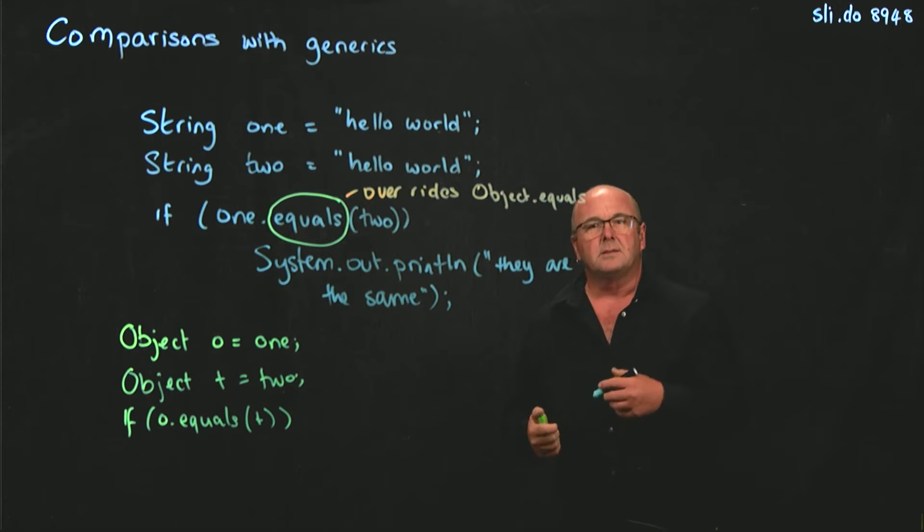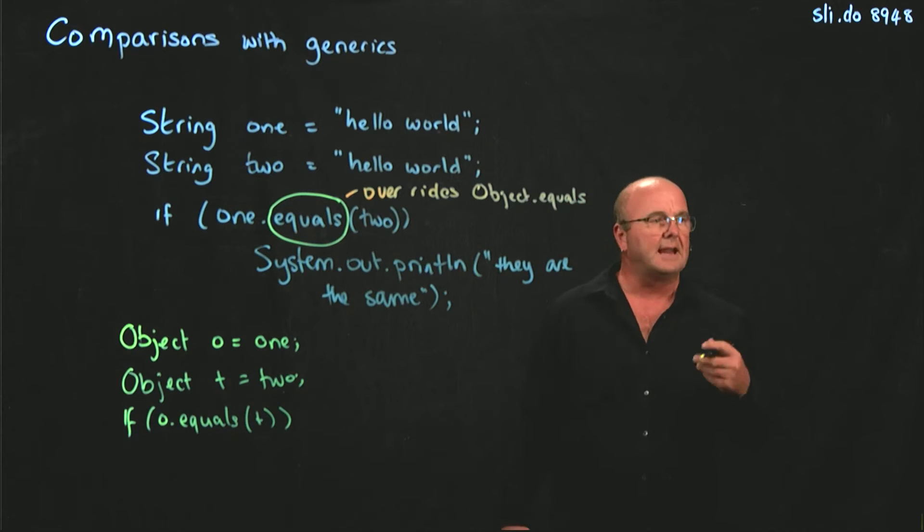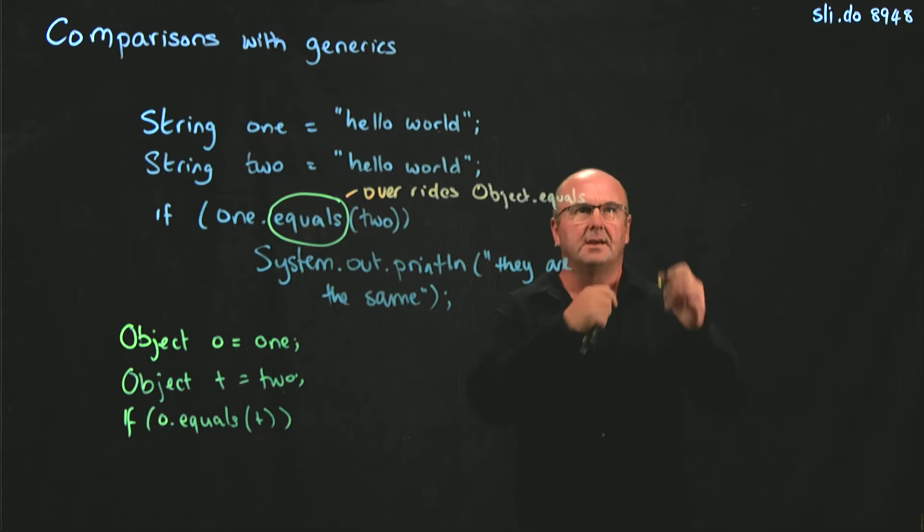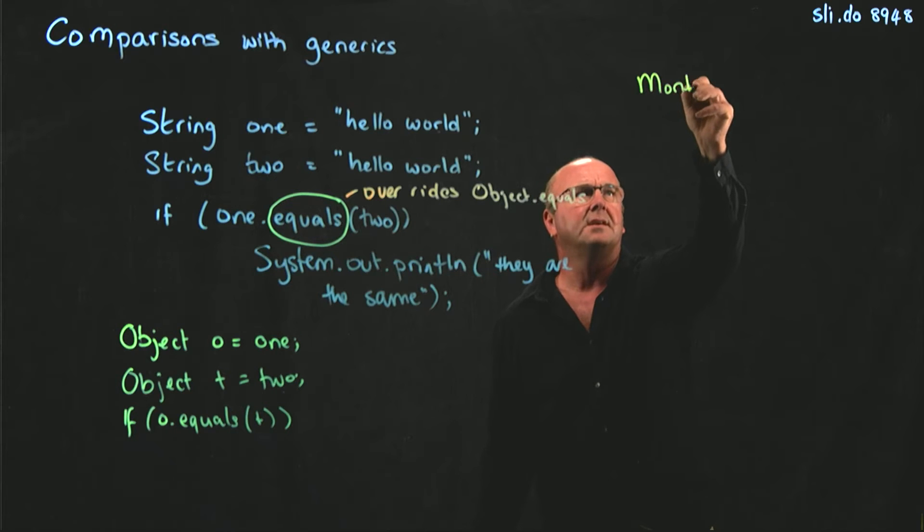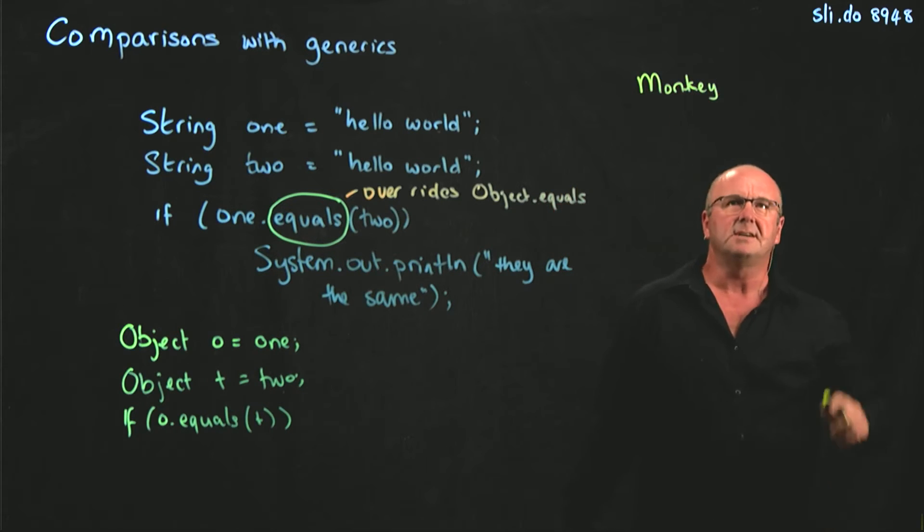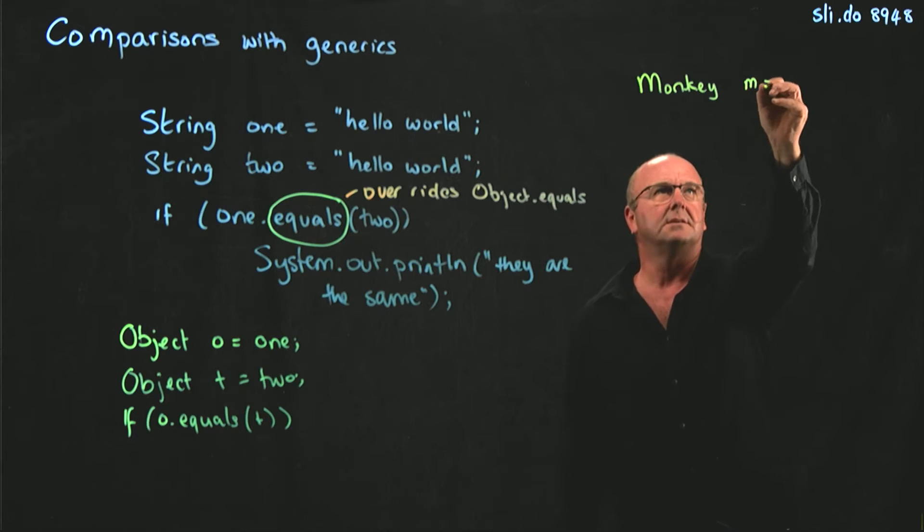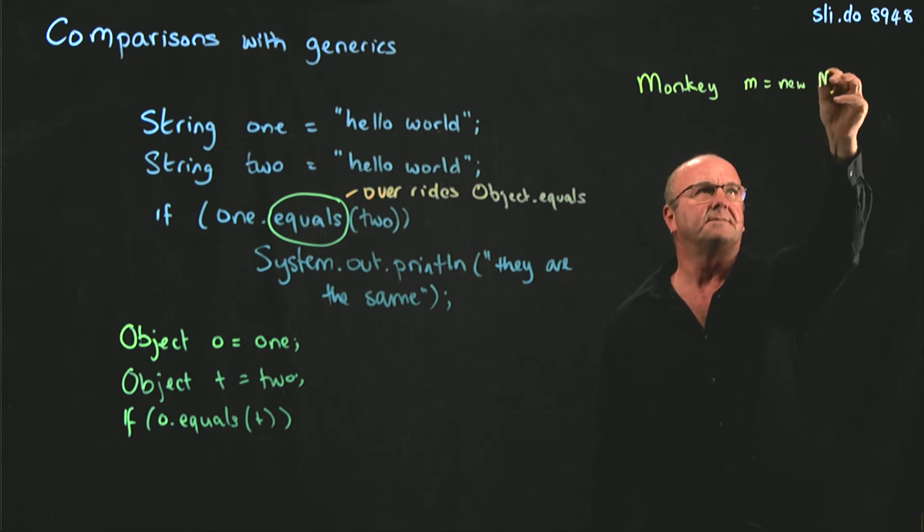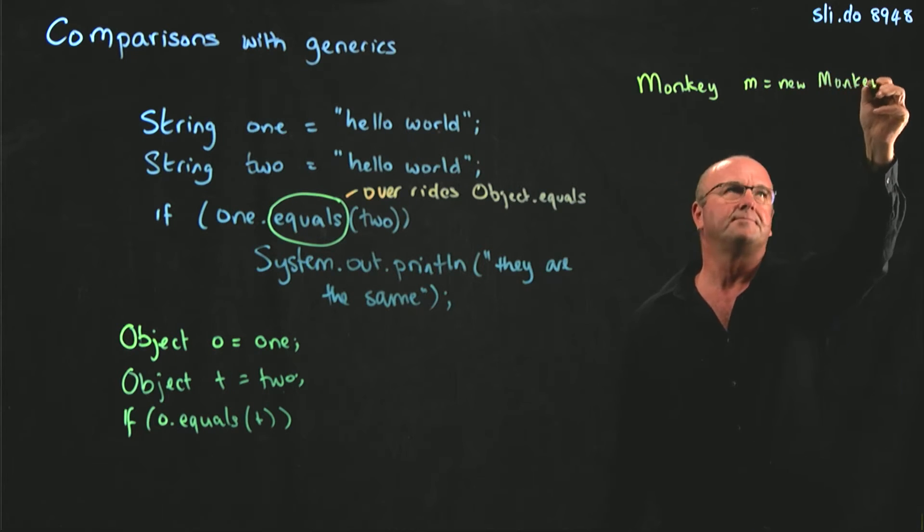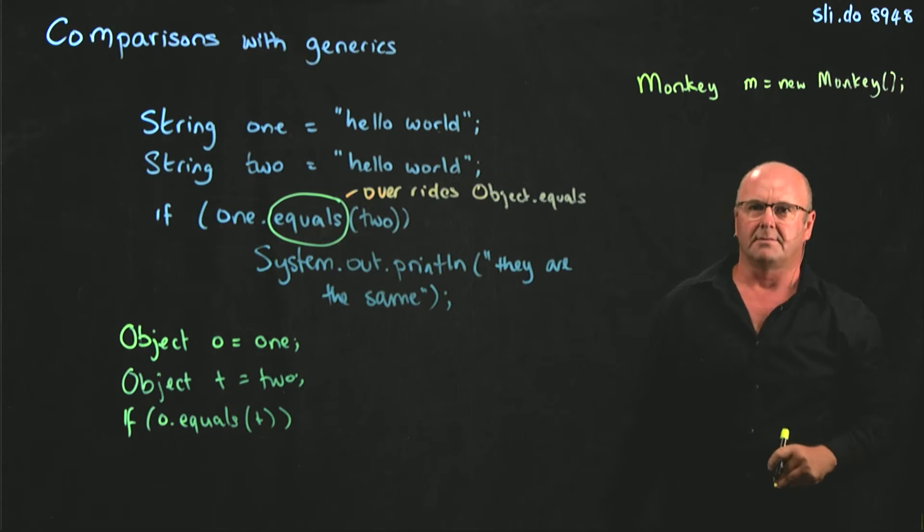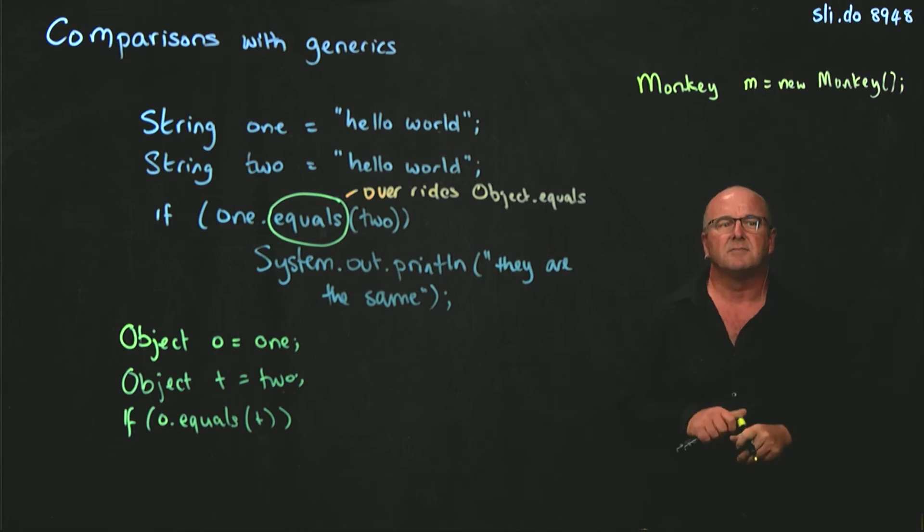So the problem that we run into is that if we're building a data structure, and we allow people to use our data structure because we're nice and generous people, and let's say somebody comes along and they create a class of monkeys. Monkeys are my favorite class just because they're fun. So we create a class of monkeys.